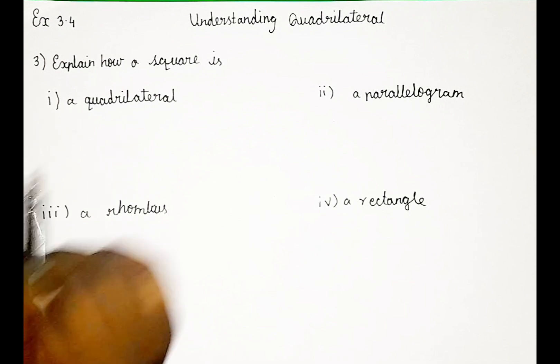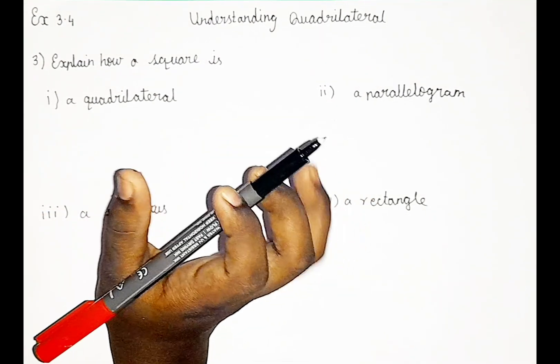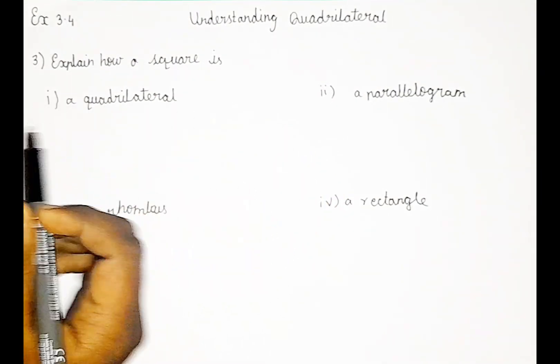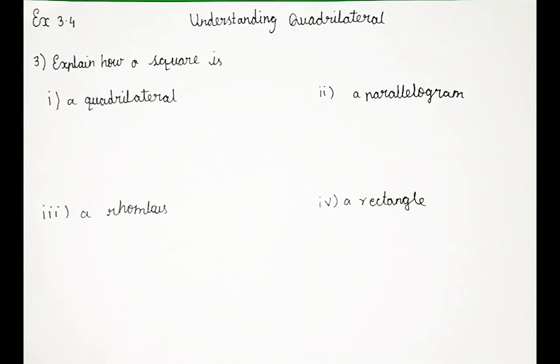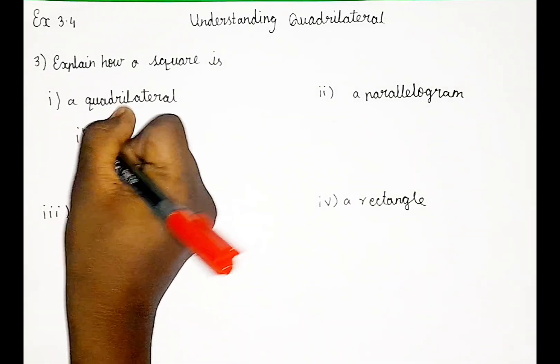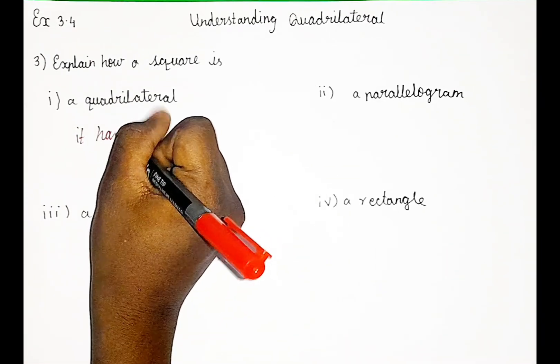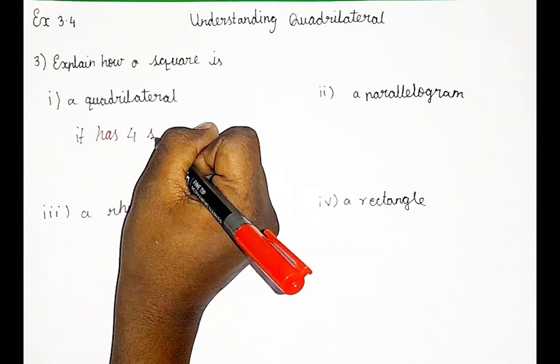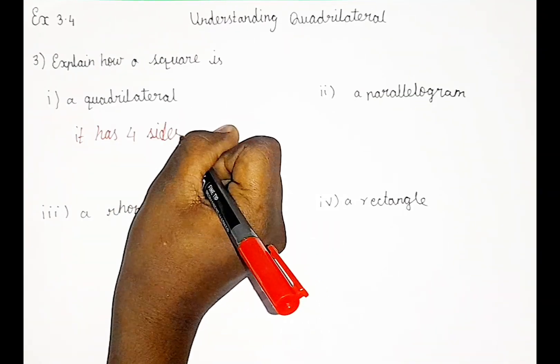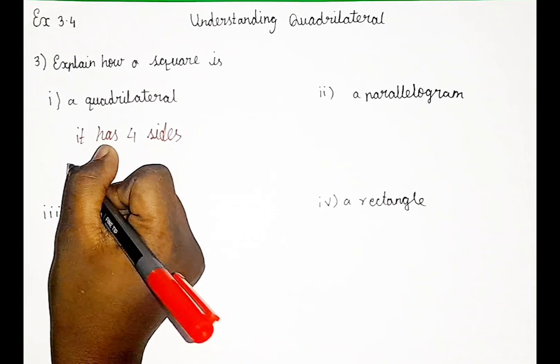So for this, you should know all the properties in this lesson. So here, how can a square be a quadrilateral? Because it has 4 sides. As you guys know, in square, let me draw a square.